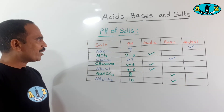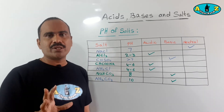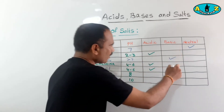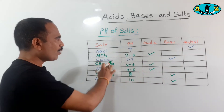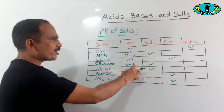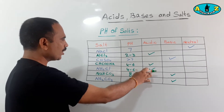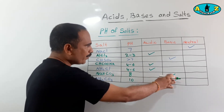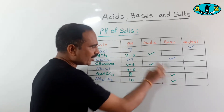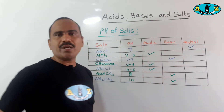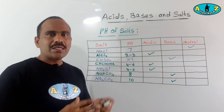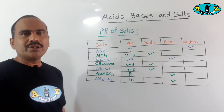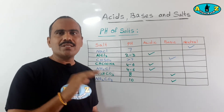From this activity, we can understand that salts are formed in neutralization reactions. But some salts are acidic in nature and some are basic in nature. For example, aluminum chloride is acidic, copper sulfate is basic, sodium acetate is acidic, ammonium chloride is acidic, and sodium carbonate and sodium hydrogen carbonate are both basic in nature. But sodium chloride is a neutral salt. So there are three types of salts: neutral salts, acidic salts, and basic salts.